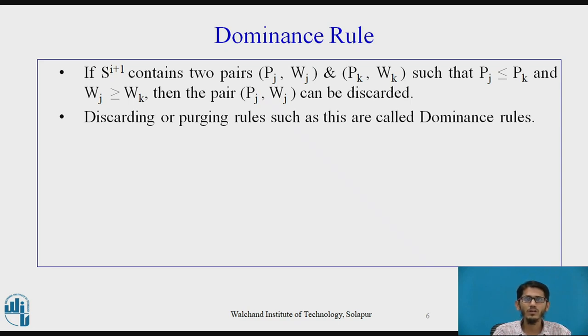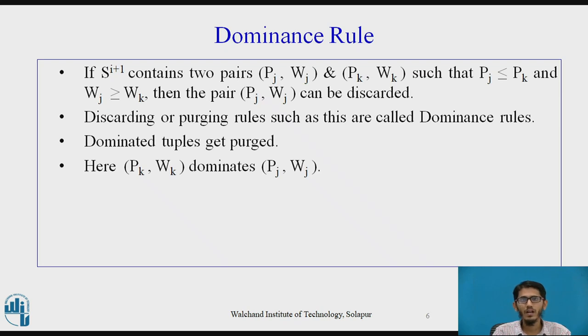Discarding or purging rules such as this are called dominance rules. With the help of dominance rules, such tuples would be eliminated. Actually, we can say that dominated tuples get purged. Now, here (pk, wk) dominates (pj, wj).